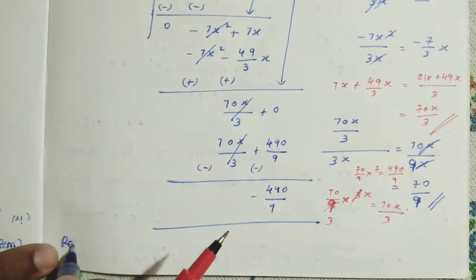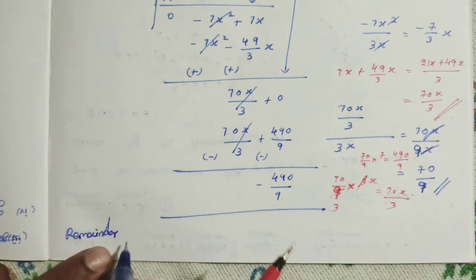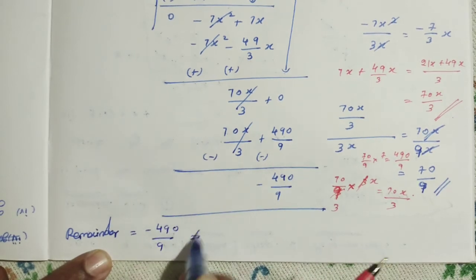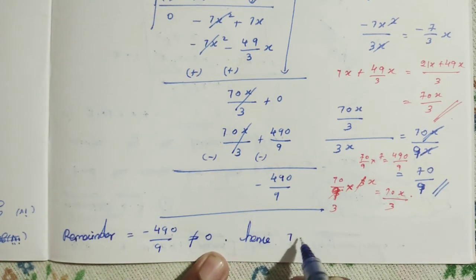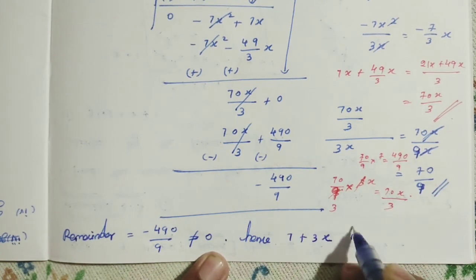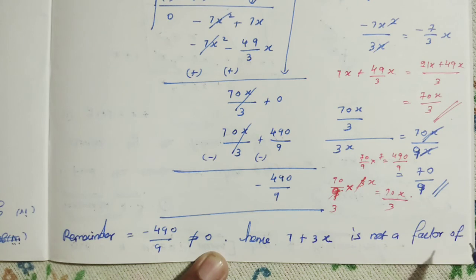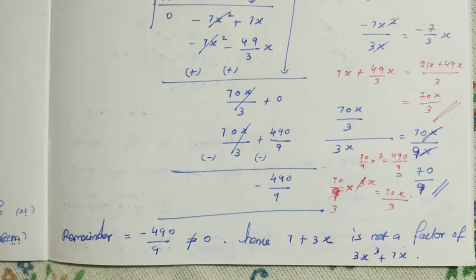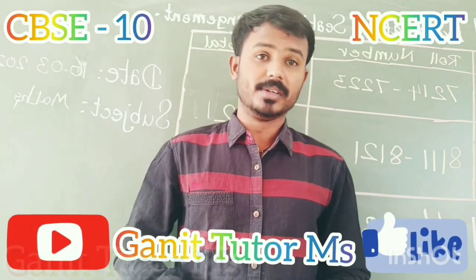Since the remainder equals minus 490 by 9, which is not equal to 0, we conclude: hence, 7 plus 3x is not a factor of 3x cubed plus 7x. I hope in this video you are now clear about the problem. Thank you for watching my video. If you have any doubt, you can ask me in a comment. Thank you.